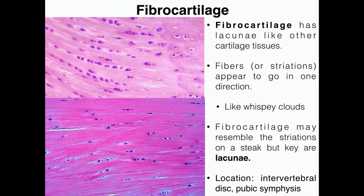Fibrocartilage we're going to see in a couple of lectures. When we look at the pelvis, the two halves called os coxae are actually joined by a type of fibrocartilage known as the pubic symphysis. But the more important area where you have fibrocartilage is actually the intervertebral discs, which we'll look at in the next lecture on bones. Each vertebra is cushioned from the adjacent one by a fibrocartilage deposit called the intervertebral disc.